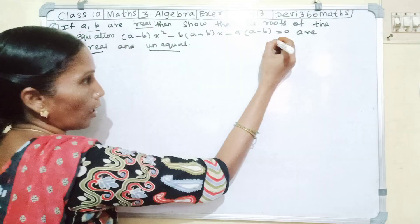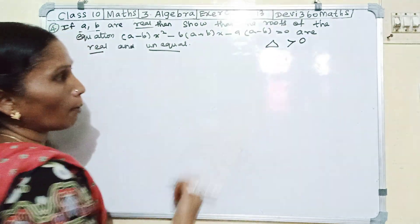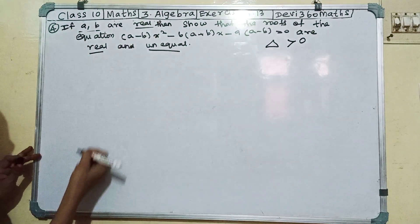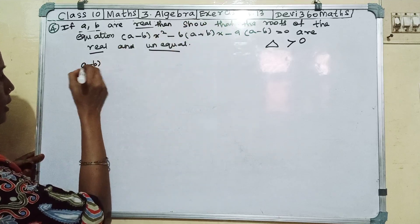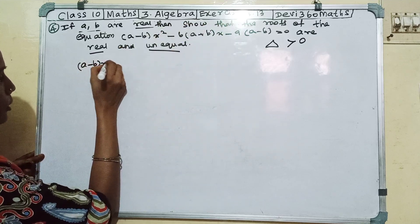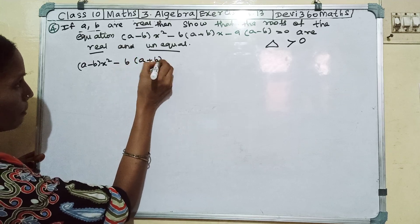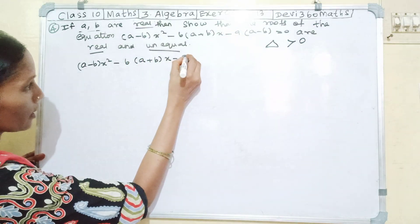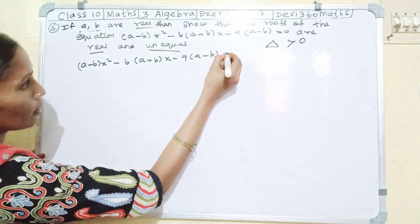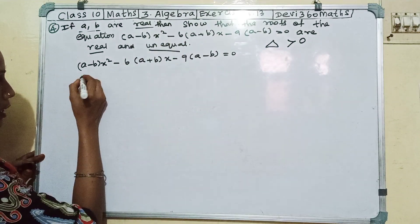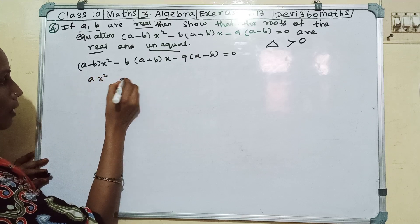Real and unequal means the value of delta is greater than 0. We will prove that. The given equation is (a minus b)x squared minus 6(a plus b)x minus 9(a minus b) equals 0. This is the general form of the quadratic equation — we will compare it.